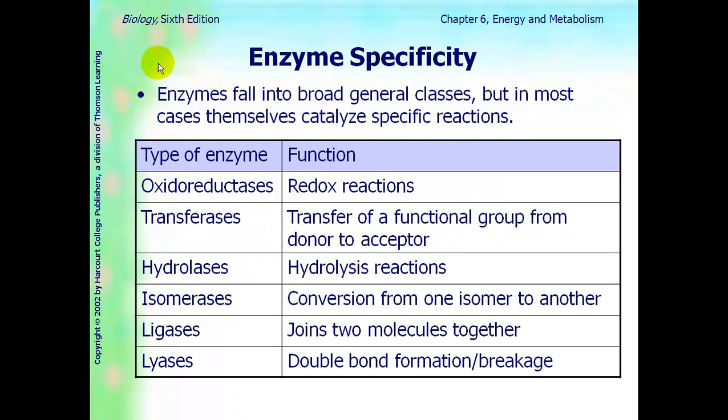There are different groups that enzymes fall in, or classes, I should say, depending on what their job is. So enzymes that do redox reactions are in the class oxidoreductases. And notice all of these groups are ending in ASE. Enzymes that transfer functional groups from donors to receptor molecules are called transferases. Enzymes that have a role in hydrolysis reactions are called hydrolases. Ones that convert from one isomer to another are called isomerases. Ones that join two molecules together, ligases. And lyases is when they're breaking bonds. So all enzymes will fit into these general categories.